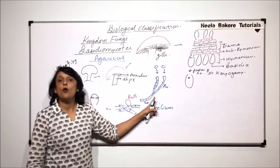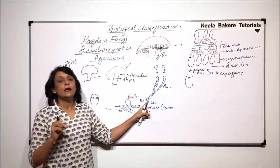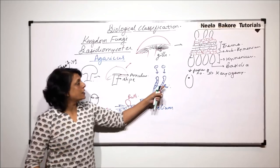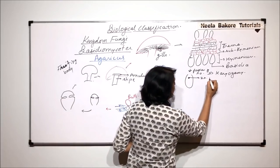Whereas here, it was only cytoplasmic fusion which took place. The nuclei of two strains were still separate. But here, we get a diploid nucleus.